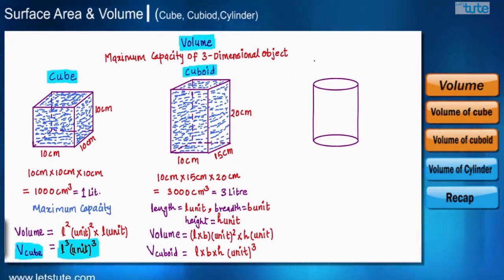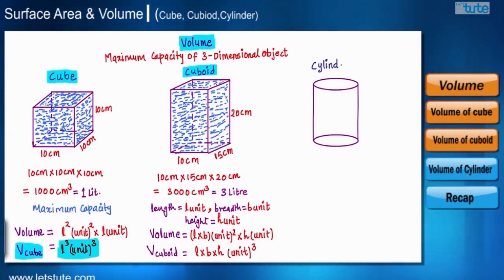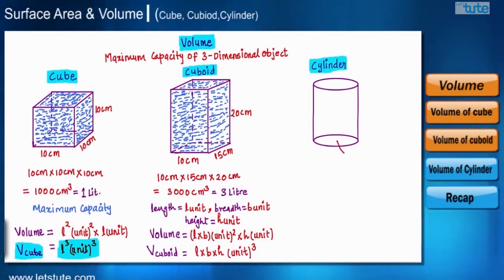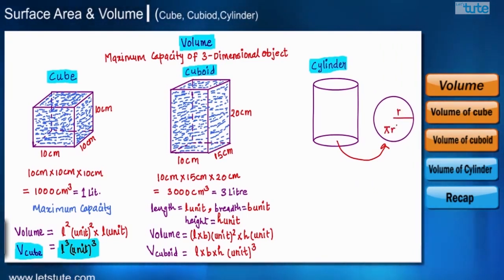We can notice that for uniform shapes, multiplying the area of the base by the height gives the volume. Now we have one more three-dimensional shape: a right circular cylinder. The base of a right circular cylinder is circular, and the area of a circle with radius r is π r squared.